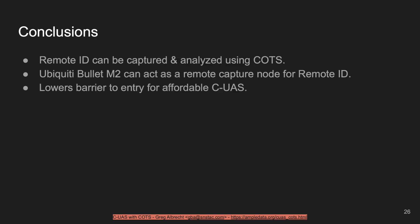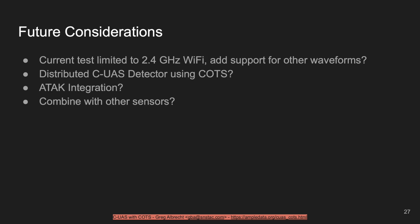Conclusions: remote ID can be captured and analyzed using commercial off-the-shelf components. A Ubiquiti Bullet M2 can act as a remote ID capture node, and this approach lowers the barrier to entry for an affordable counter-UAS detection and tracking system. Future considerations include extending this test to waveforms other than 2.4 GHz Wi-Fi, building a distributed counter-UAS detector using COTS receivers distributed for coverage diversity, and integrations with situational awareness applications like ATAC.